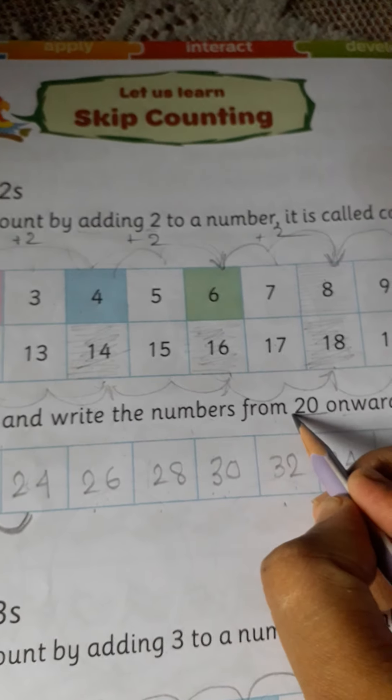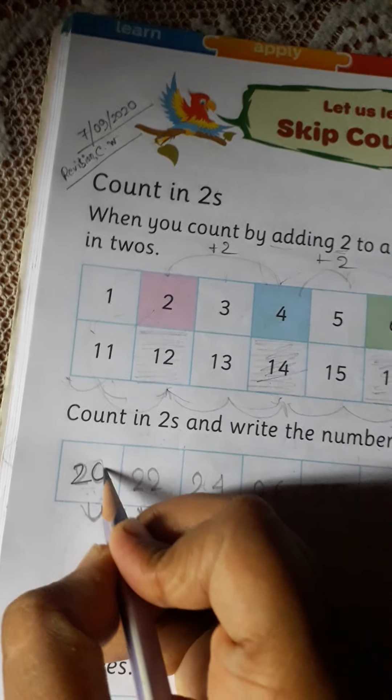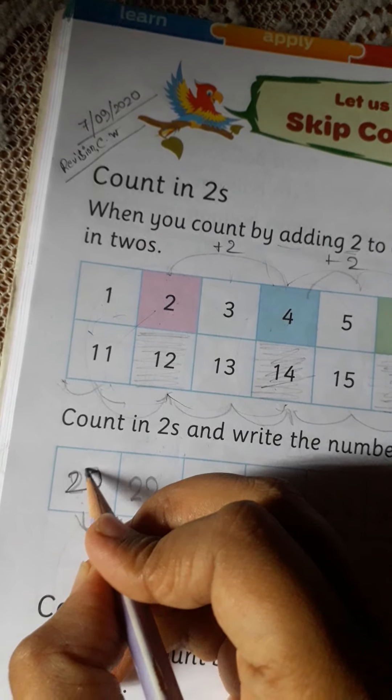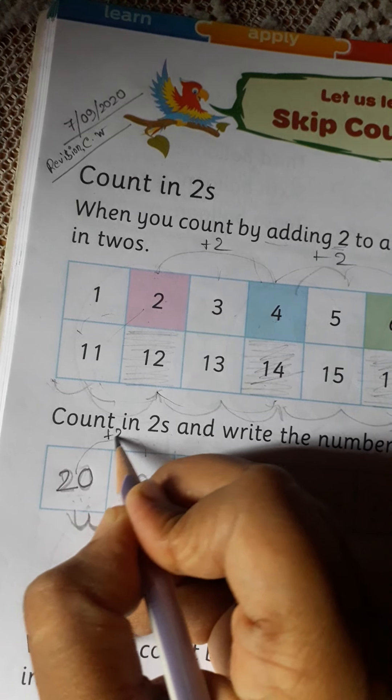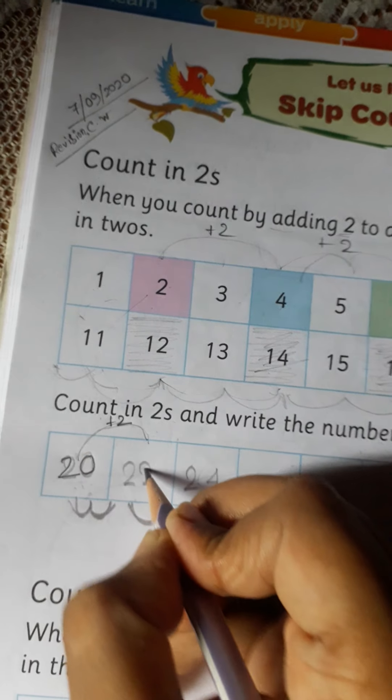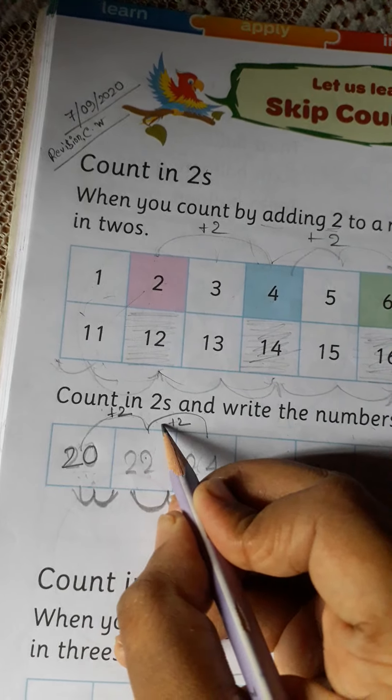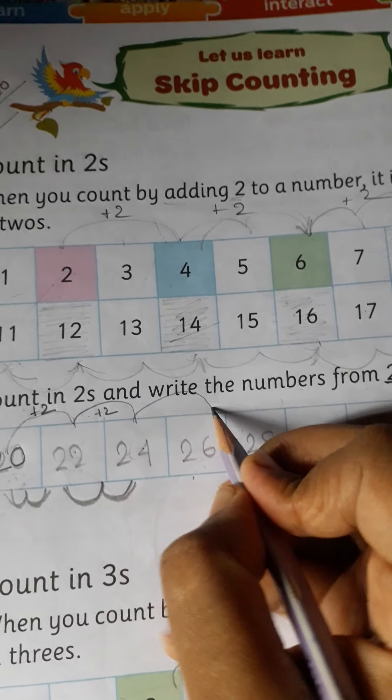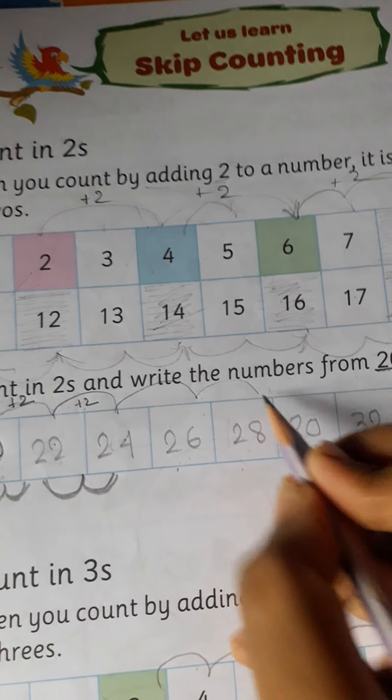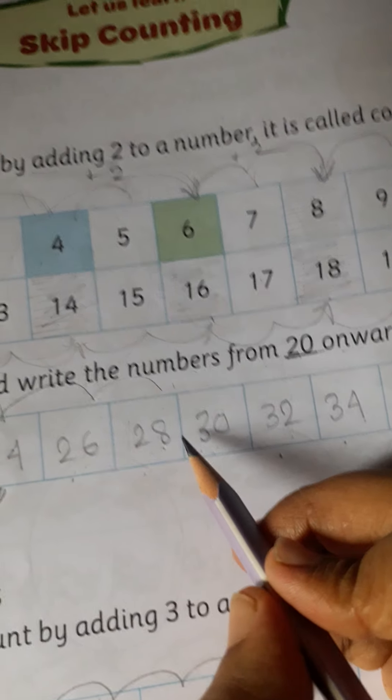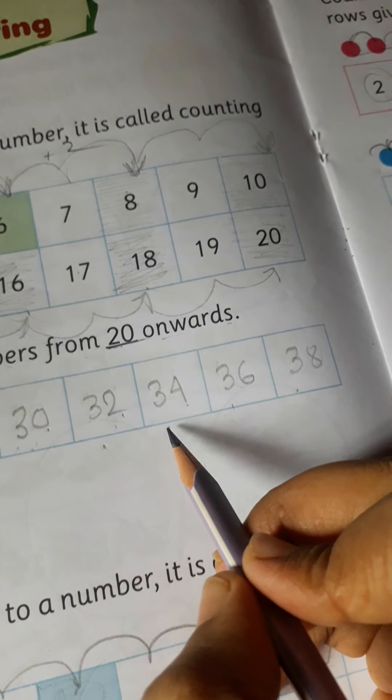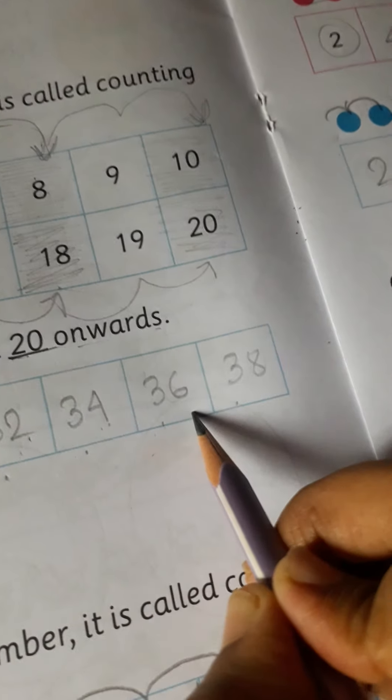Then 20, 21, 22, then 23, 24, 25, 26, 27, 28, 29, 30, 31, 32, 33, 34, 35, 36, 37, 38.